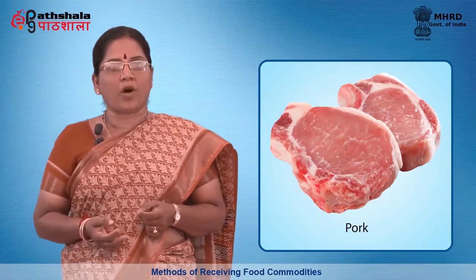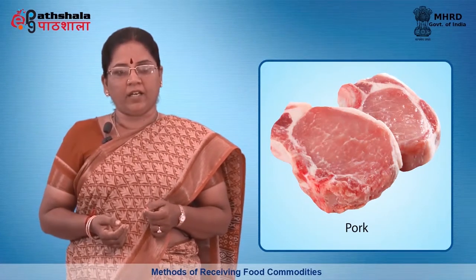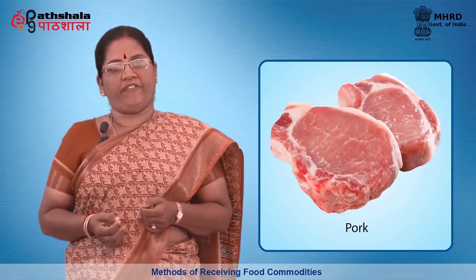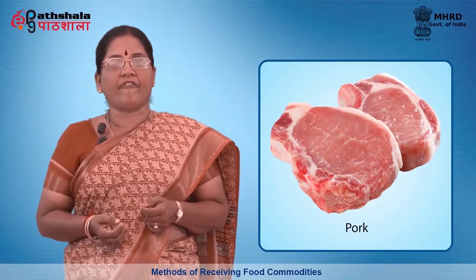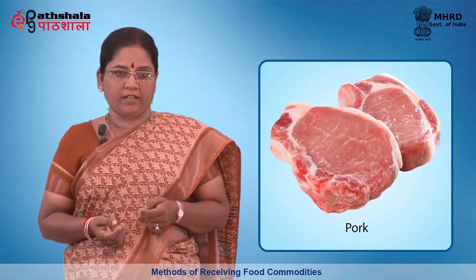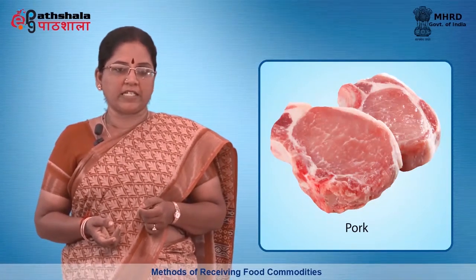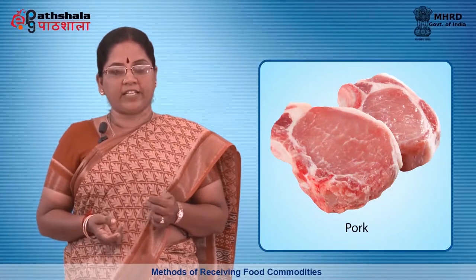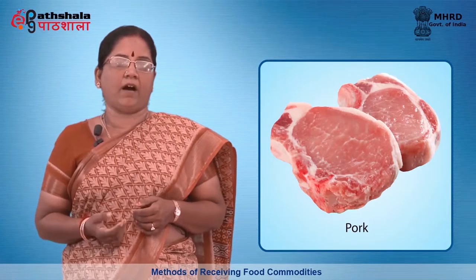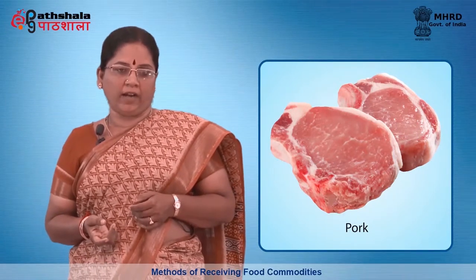The best quality pork has muscle that is greyish-white to pink in young animals and deep rose in older animals. The flesh is firm and fine-grained and the bones are soft and red. It should be delivered at a temperature of 41 degrees Fahrenheit or 5 degrees Celsius or colder. Poultry should be obtained from an approved source and the packaging should be clean and in good condition.